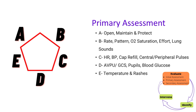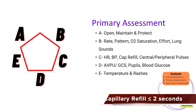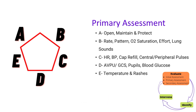An irregular respiratory rate in an acutely ill child is an ominous clinical sign and often signals impending arrest. Under C — circulation — evaluate the heart rate and rhythm, blood pressure, capillary refill (which should be below 2 seconds), and the central and peripheral pulses. Weak central pulses are worrisome and might indicate the need for rapid intervention to prevent cardiac arrest.